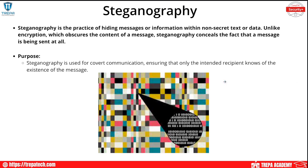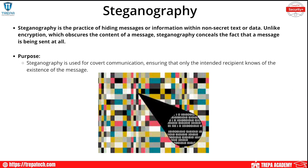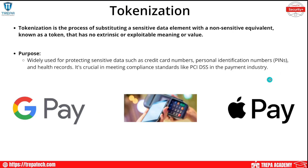Steganography is another form of obfuscation. Steganography is the practice of hiding messages or information within non-secret text or data. Unlike encryption, which obscures the content of a message, steganography conceals the fact that a message is being sent at all. It's used for covert communication. One application you can use to get into steganography is Veracrypt — open source and available to download — where you can hide files within files, which is a form of steganography.